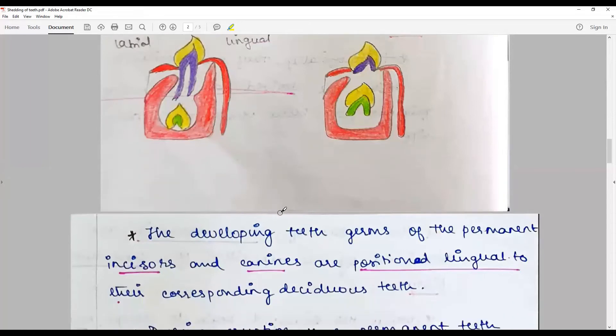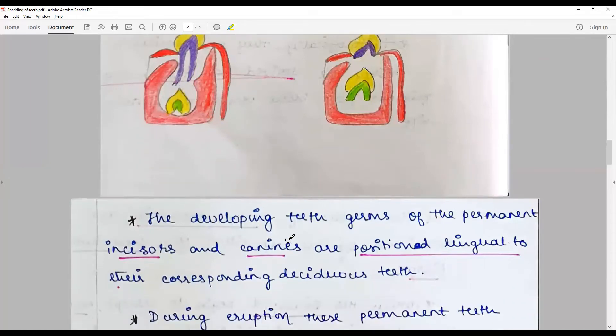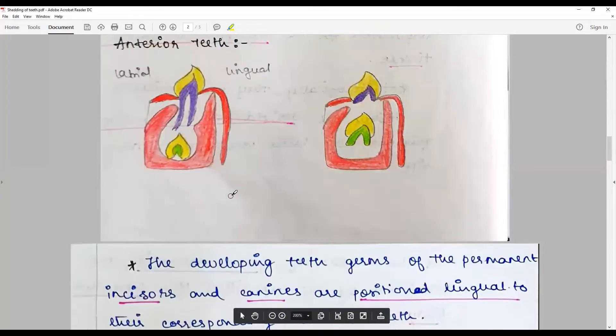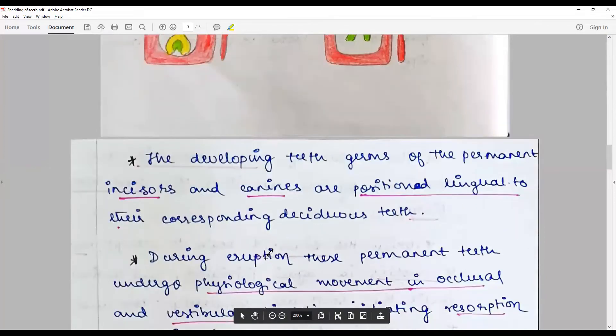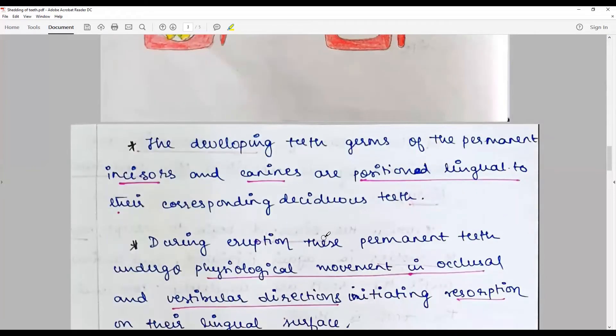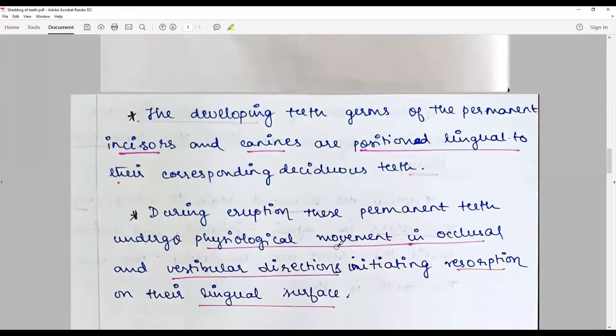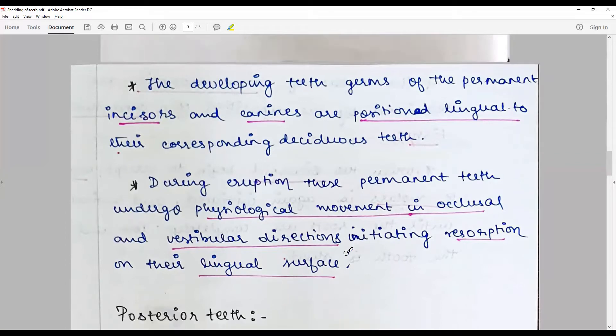The developing tooth germs of the permanent incisors and canines are positioned lingual to their corresponding deciduous teeth. During eruption of the permanent teeth, the deciduous undergo physiological movement in occlusal and vestibular direction, initiating resorption of the deciduous incisors and canines on their lingual surface.